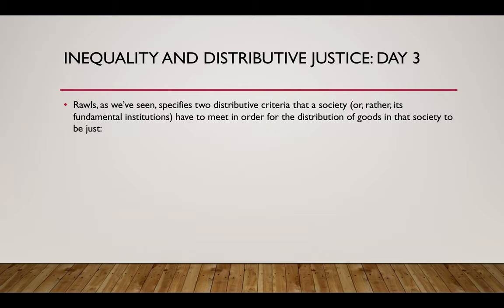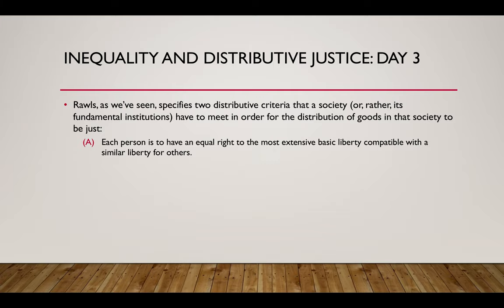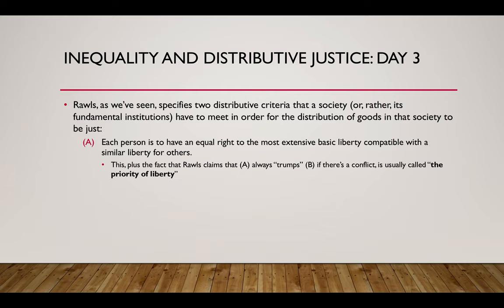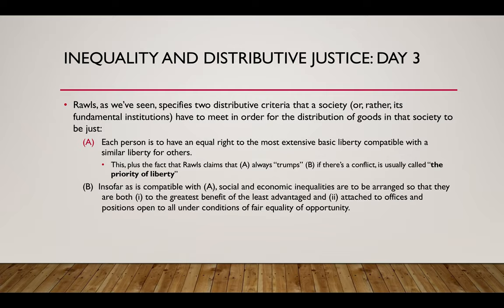John Rawls specifies two distributive criteria that a society — or rather its fundamental institutions — have to meet in order for the distribution of goods in that society to be just. First, each person is to have an equal right to the most extensive basic liberty compatible with a similar liberty for others. This, plus the fact that Rawls claims A always trumps B if there's a conflict, is usually called the priority of liberty. The second principle is that insofar as is compatible with A, social and economic inequalities are to be arranged so that they are both one, to the greatest benefit of the least advantaged, and two, attached to offices and positions open to all under conditions of fair equality of opportunity. This, and especially part one, is the difference principle.